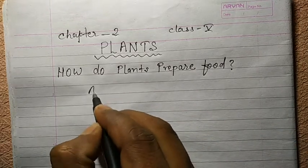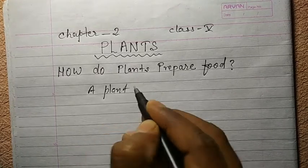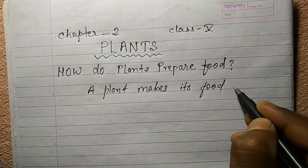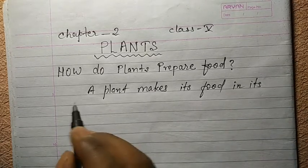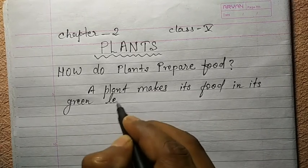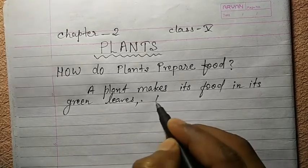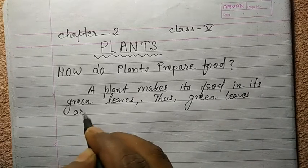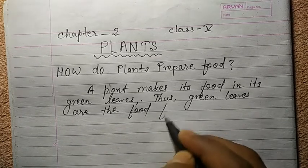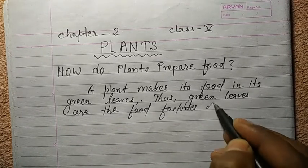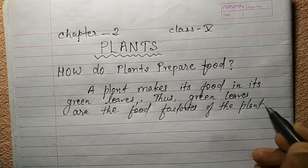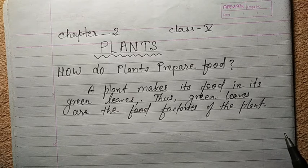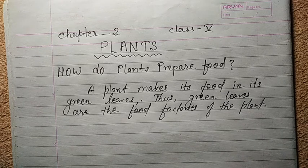A plant makes its food in its green leaves. Thus green leaves are the food factories of the plant. And this process is known as photosynthesis. The process by which plants prepare their food is known as photosynthesis.